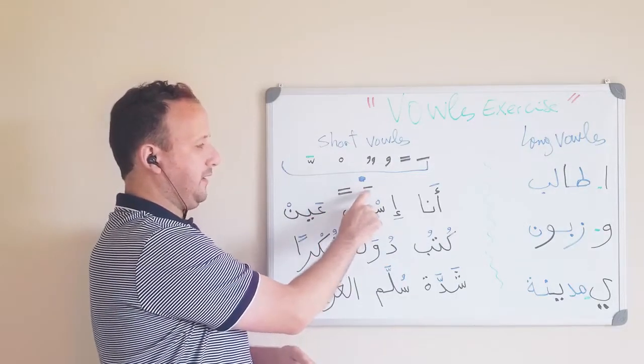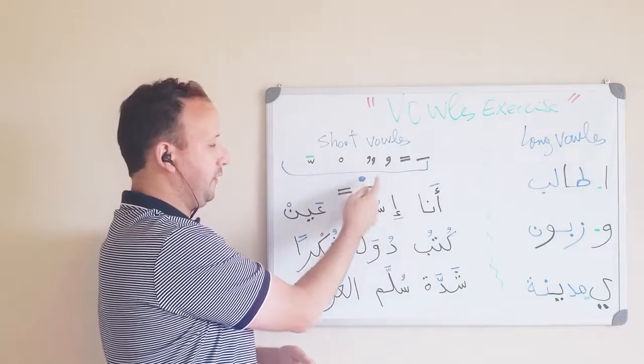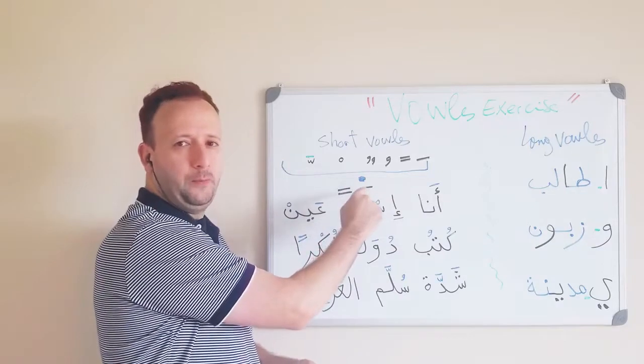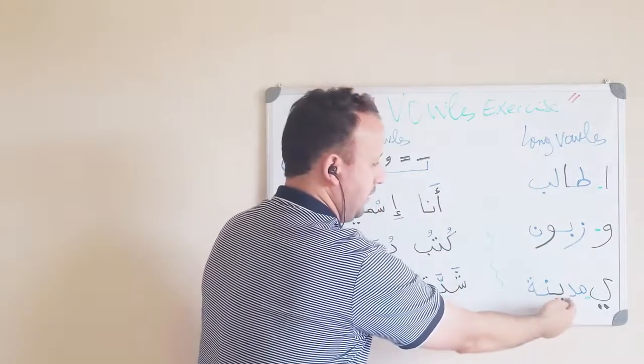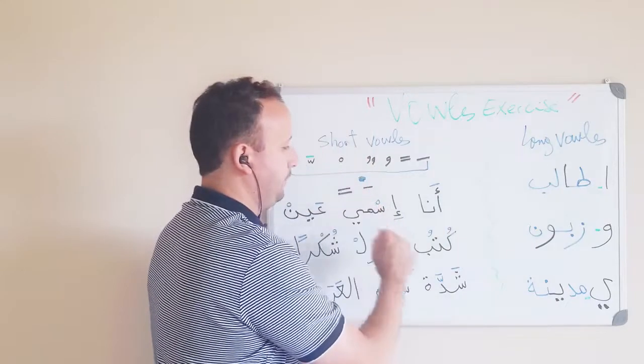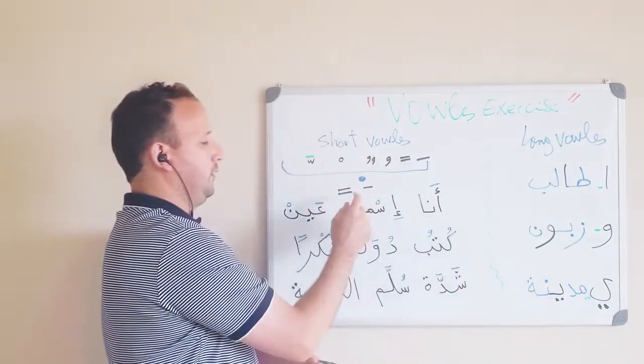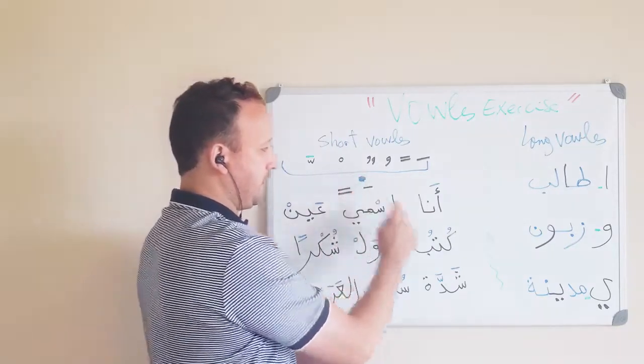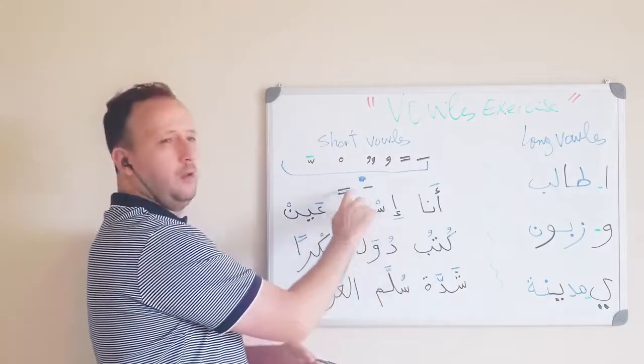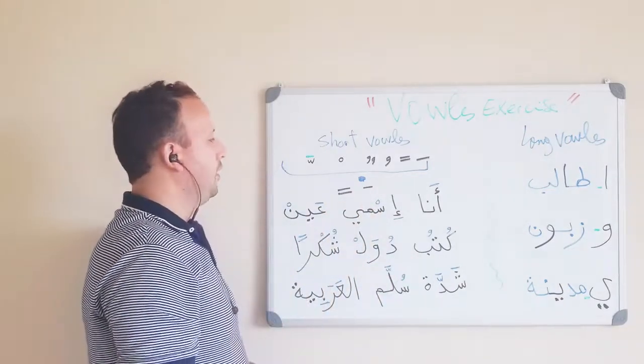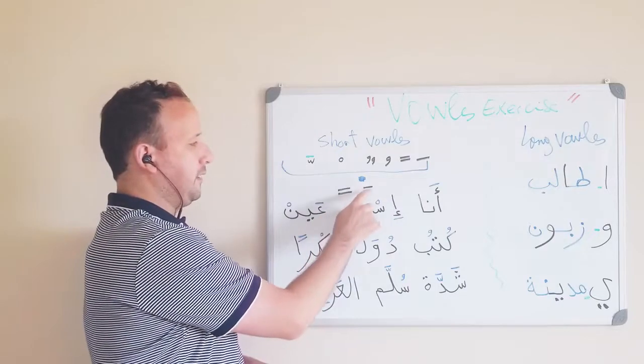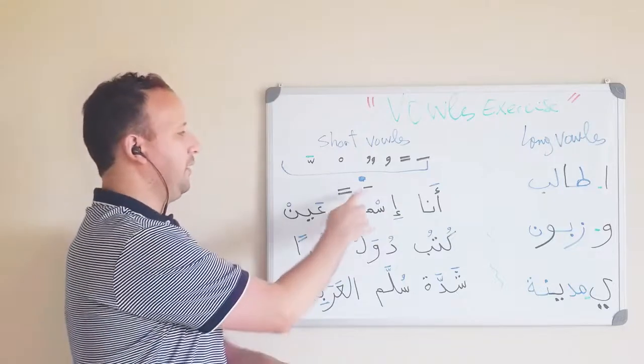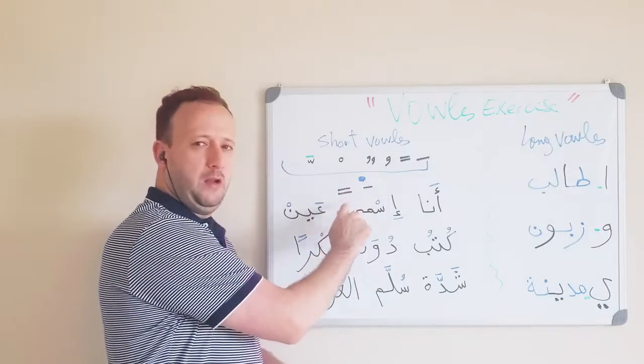And this one is called kasra. If it's under the letter, in this case we have B, it's going to be pronounced bi. Bi is short for ya. This is bi. This is bi. So this would be Madina. And this is just short e. So if we have this letter here, b. This is just b. And this is obviously, it looks the same, but it's double, it's tanween. You're going to have the N again. So it would be bin.